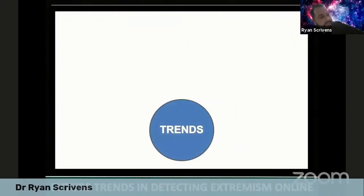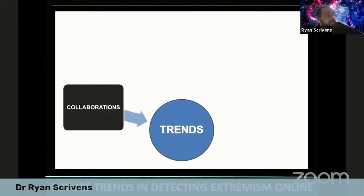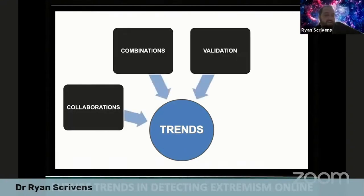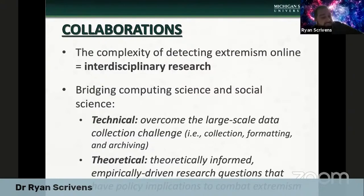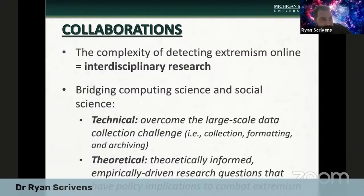Thinking ahead, based on my experiences working in this field, I'm going to offer a number of future trends in detecting extremism online: collaborations, combinations, validations, and adaptations. Collaborations are going to be key. It is very complicated to detect extremism online and will definitely require a multidisciplinary or interdisciplinary approach. It's going to be important that we continue to bridge computing science with social sciences. From a computational perspective, computer scientists can help social scientists overcome large-scale data collection challenges — collecting, formatting, and archiving large amounts of information. From a social science perspective, we can offer theoretically informed, empirically driven research questions with policy implications on combating violent extremism.